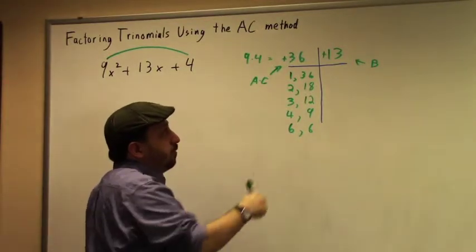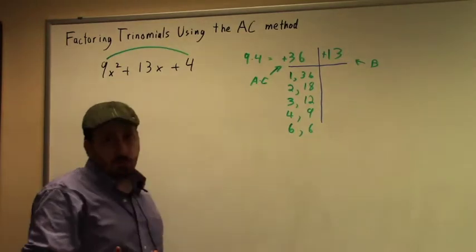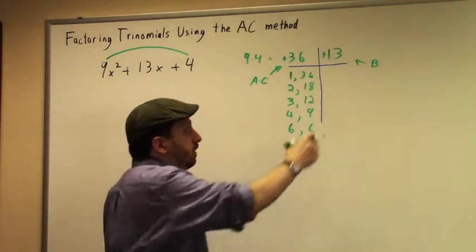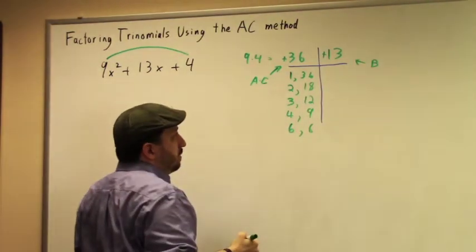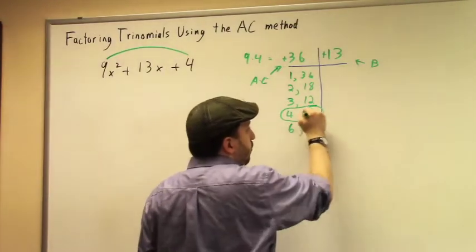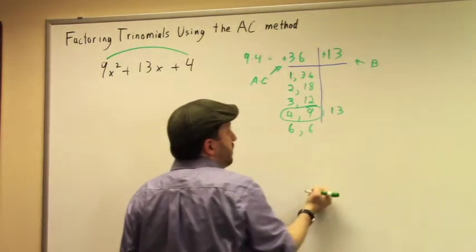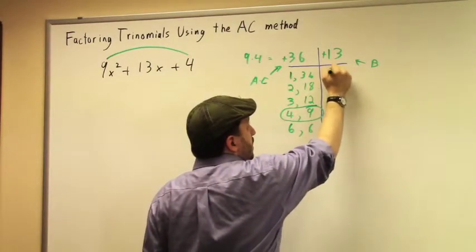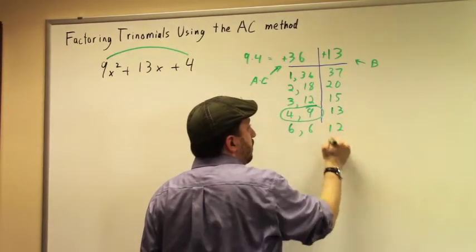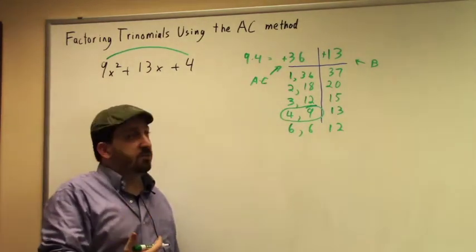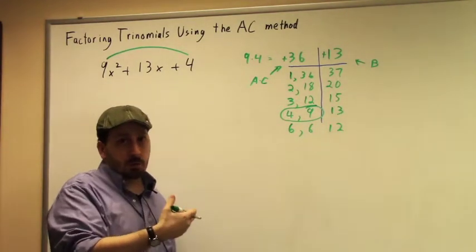What we're looking for now, just like you would for the reverse FOIL method, is you're looking for a pair of factors here that is going to combine to give you that middle term. So in this case, our pair is going to be 4 and 9, because when I do 4 plus 9, that gives me 13. This gives me 15, I can't use that. That gives me 20, that gives me 37, and that gives me 12. So 4 plus 9 is the pair, the unique pair, that's going to give me the number that I want in the middle.